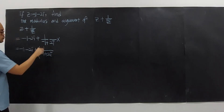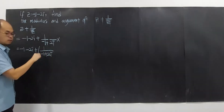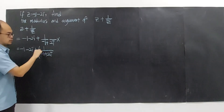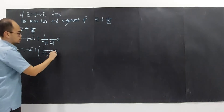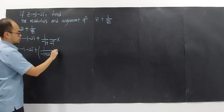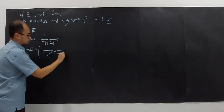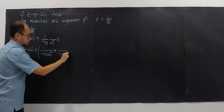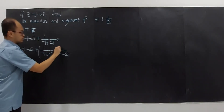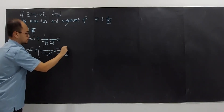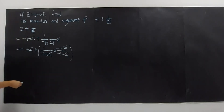When you do division involving complex numbers, we cannot have a complex number in the denominator. So we multiply by the conjugate of negative 1 plus 2i, which is negative 1 minus 2i.